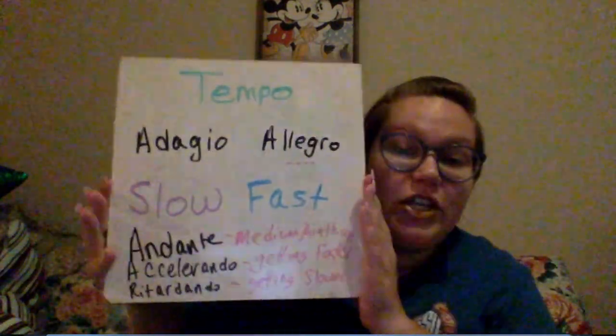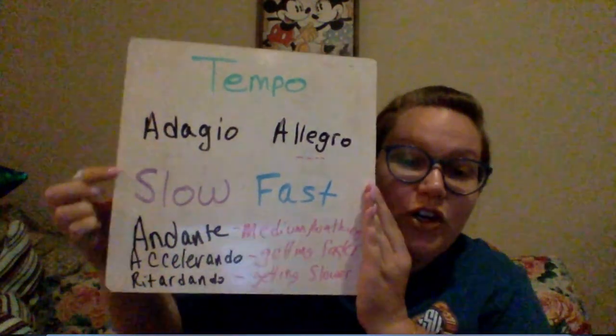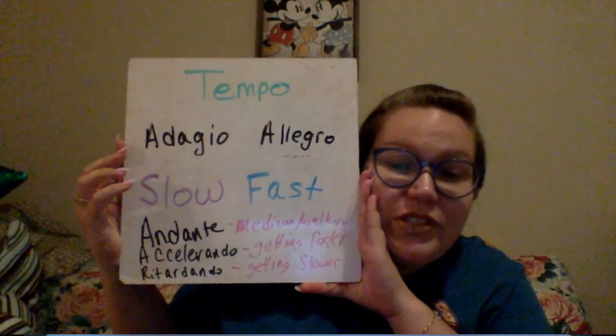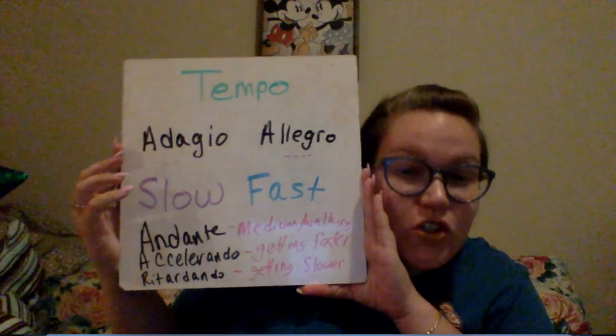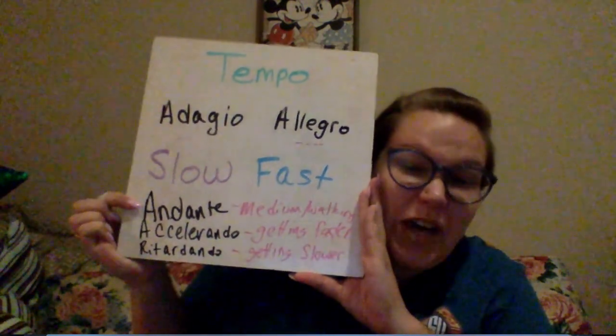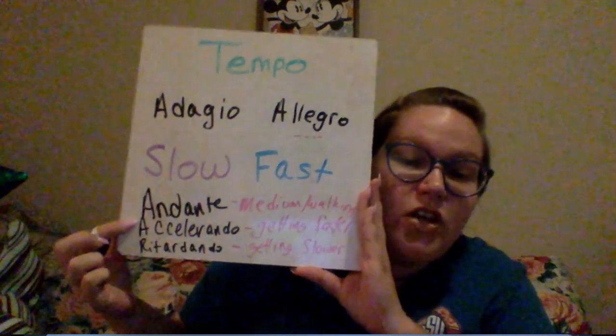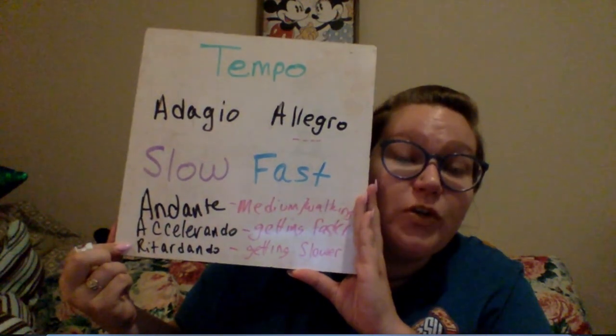So our tempo words that you need to know are adagio — slow — and allegro — fast. And the words I just want you to have seen and start to remember are andante, which means a medium tempo like walking speed; accelerando, which means getting faster; and retardando, which means getting slower. That is all I have for our lesson — I have my notes down over here, so that's why I'm looking this way. That's all for our lesson!